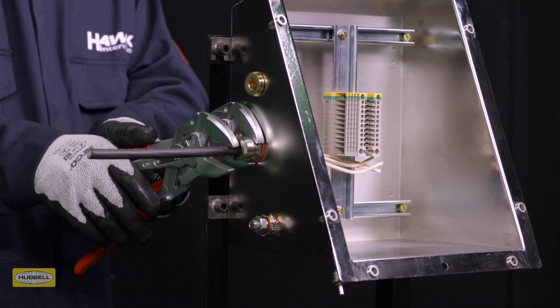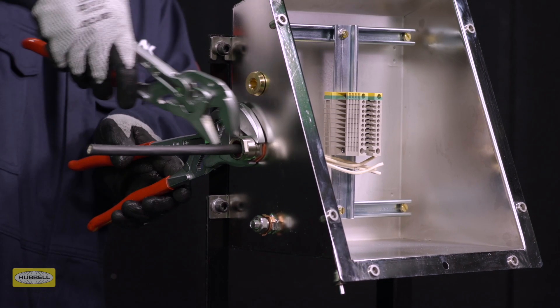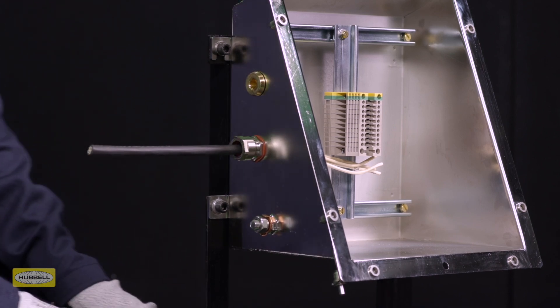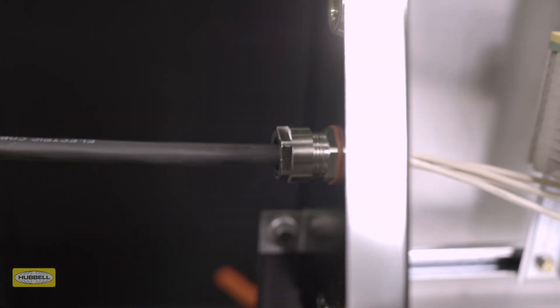Then, turn the back nut through a further half to one full turn to complete the inner seal. Installation is complete.